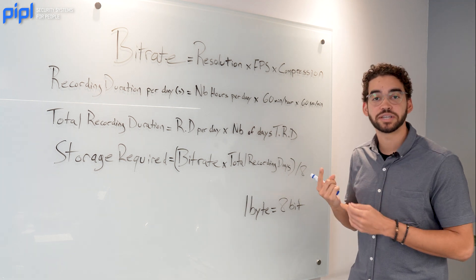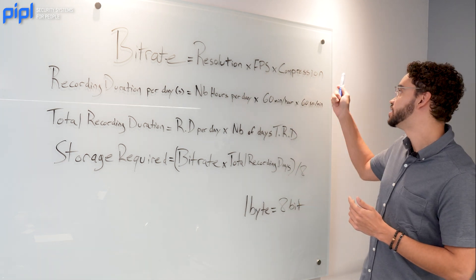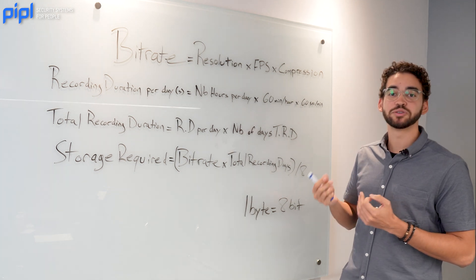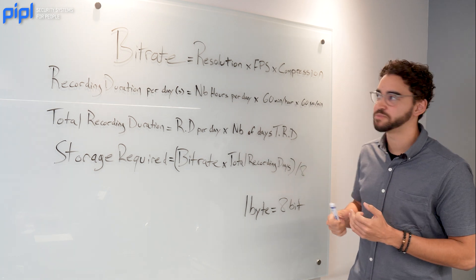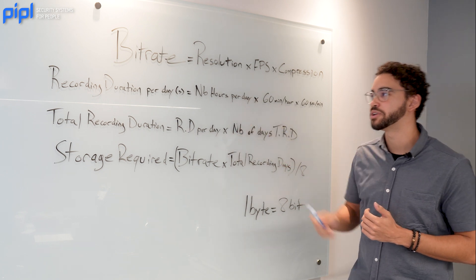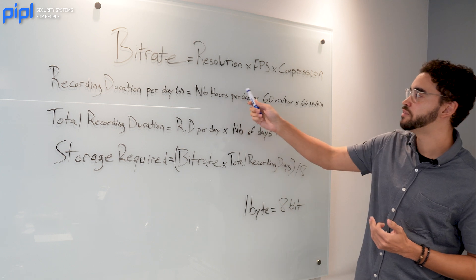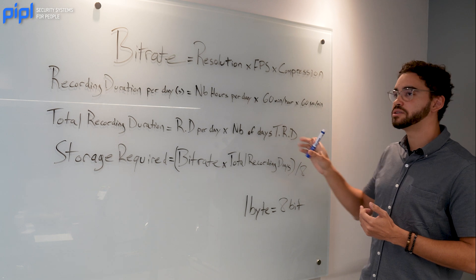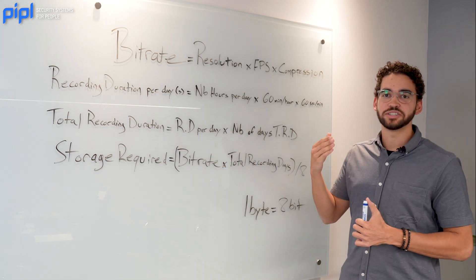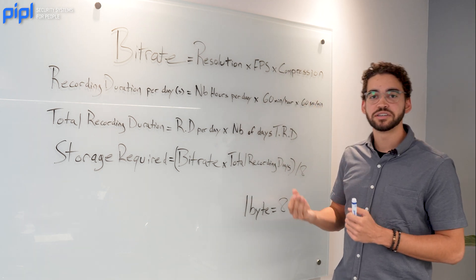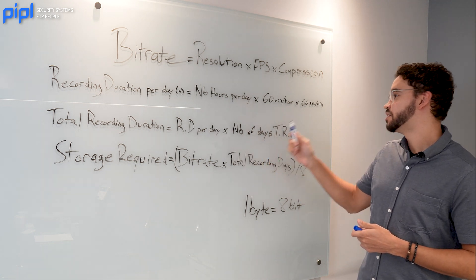Once you have the bitrate, you need to calculate the recording duration per day in seconds: number of hours per day times number of minutes times number of seconds. This gives you a value in seconds to use in the next step. Then calculate the total recording duration: recording duration per day times the number of days. This tells you how many hours of recording you need on your hard drive and the space it will take in bits.